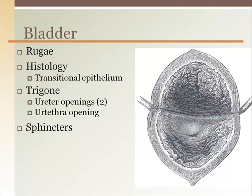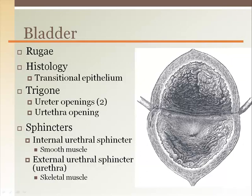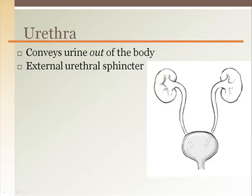There are two sphincters that control the outflow of urine. Urine collects in the bladder until it is stretched, which stimulates the relaxation of the internal urethral sphincter, which is made of smooth muscle and is involuntary. The external urethral sphincter is made of skeletal muscle and is under voluntary control — this is the one that remains closed when we hold it until getting to the bathroom. The urethra takes urine from the bladder to the outside and contains a skeletal muscle, voluntary, external urethral sphincter.